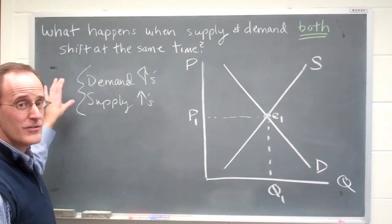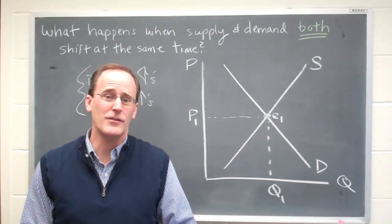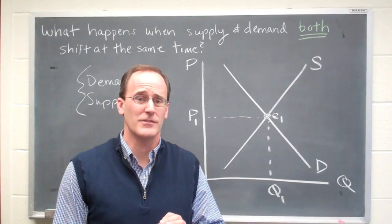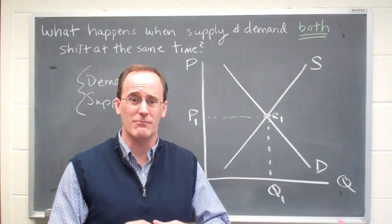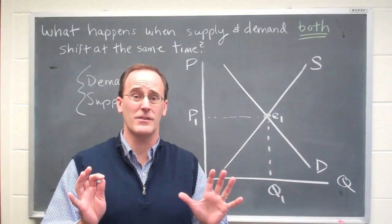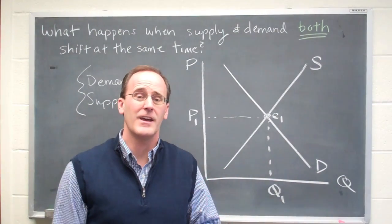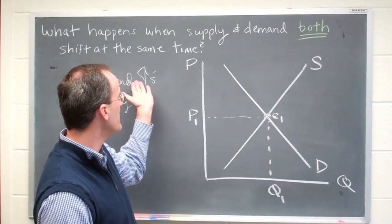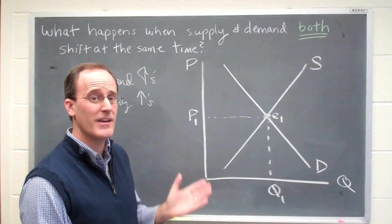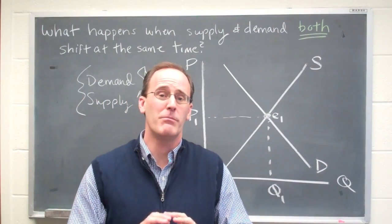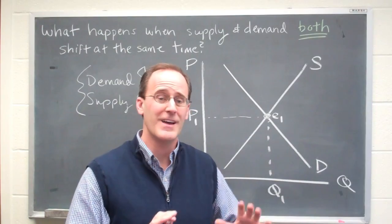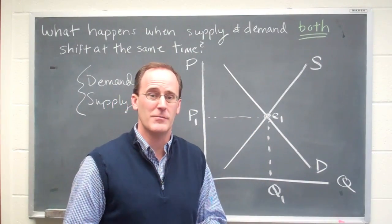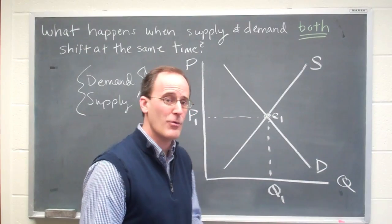So we've got two changes taking place. It's a little bit unusual because ordinarily we like to assume ceteris paribus, which means that we freeze everything that's happening in the world around us and isolate the effect of one variable changing — for instance, just demand or just supply. In this example, we're going to allow both the demand curve and the supply curve to simultaneously increase and see what we can say about the resulting price and quantity.